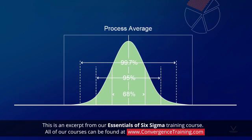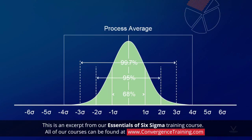When we refer to the word six, it relates to the sigma level. It represents the equally spaced sigma intervals between the customer specification limits — lower and upper — and the average centered value, or mean, of the process.